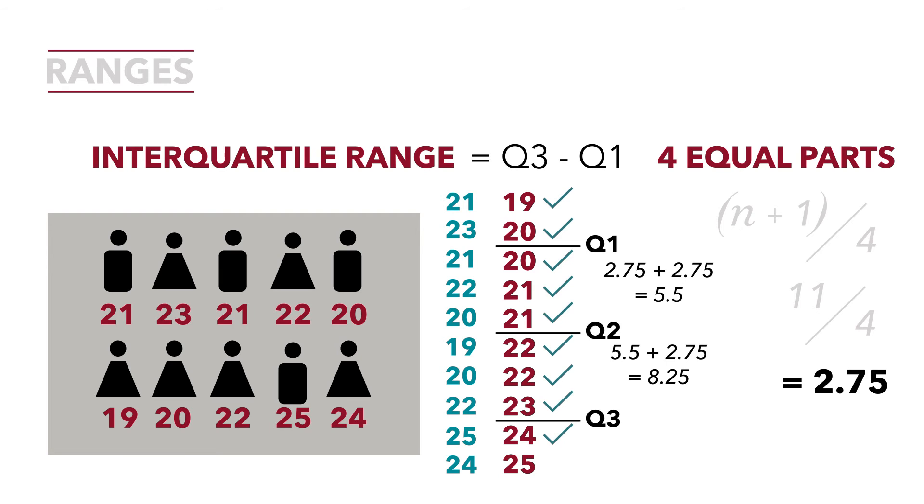Q3 equals the point between 23 and 24, which is 23.5. Q1 is the point between 20 and 20, which is 20. So we subtract 23.5 minus 20.0 equals 3.5. The interquartile range for these data is 3.5.